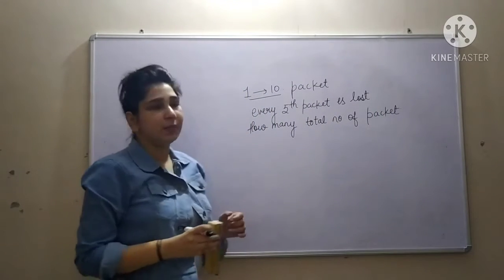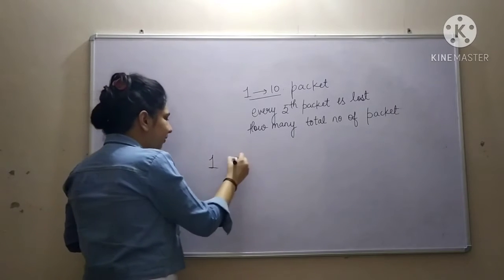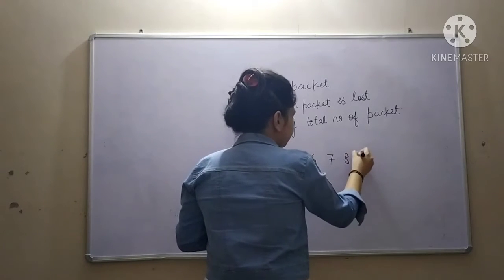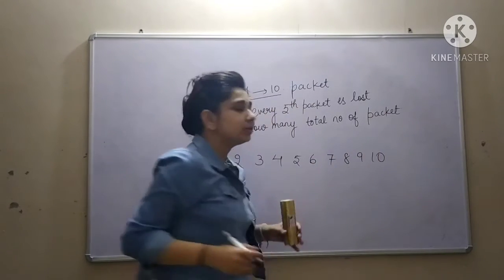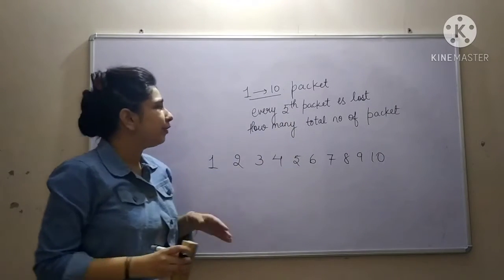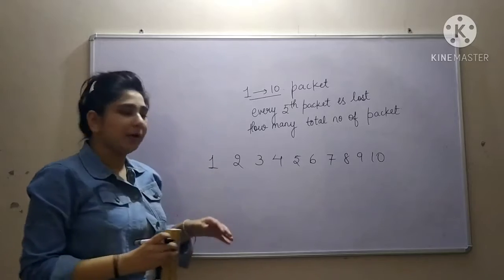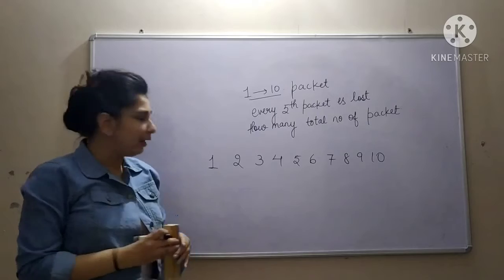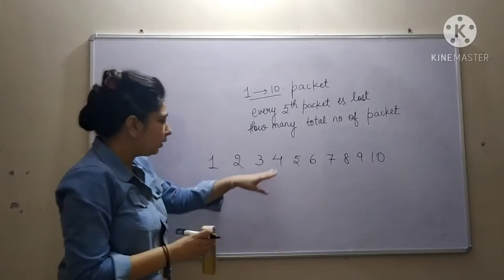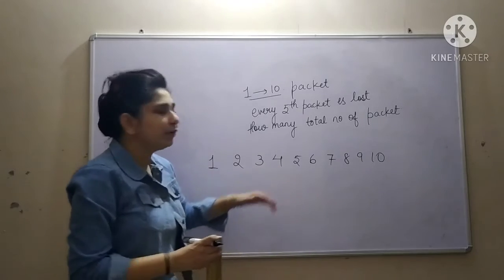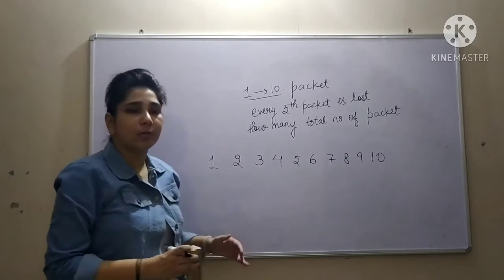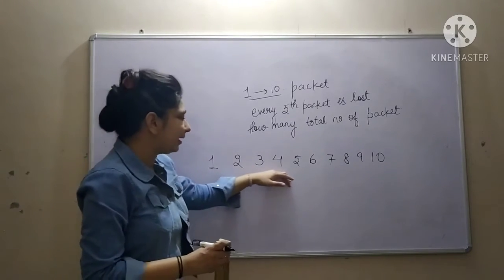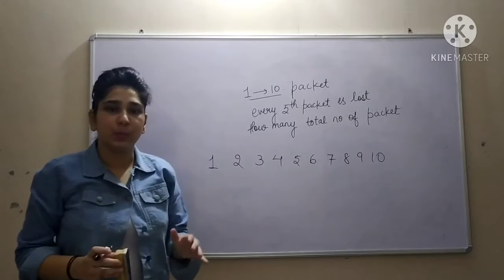So that is our question. I have 10 packets. Every fifth packet is lost. I transmitted the first packet and got the acknowledgement. Similarly, up to packet number 4, we received all the acknowledgements of the first 4 packets back from the receiver, so those 4 packets were delivered successfully.